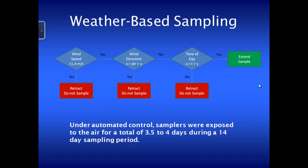We do this weather-based sampling: the system knows the wind speed at the site. If it's above 1.4 meters per second — which is what it takes to get turbulent conditions — then it checks wind direction. If the wind direction is in the right arc and it's in the time-of-day slot we're interested in, it extends the sampler; otherwise it retracts it. At most sites we leave them out for two weeks at a time, and typically the weather requirements are met for about three and a half to four days out of the fourteen.